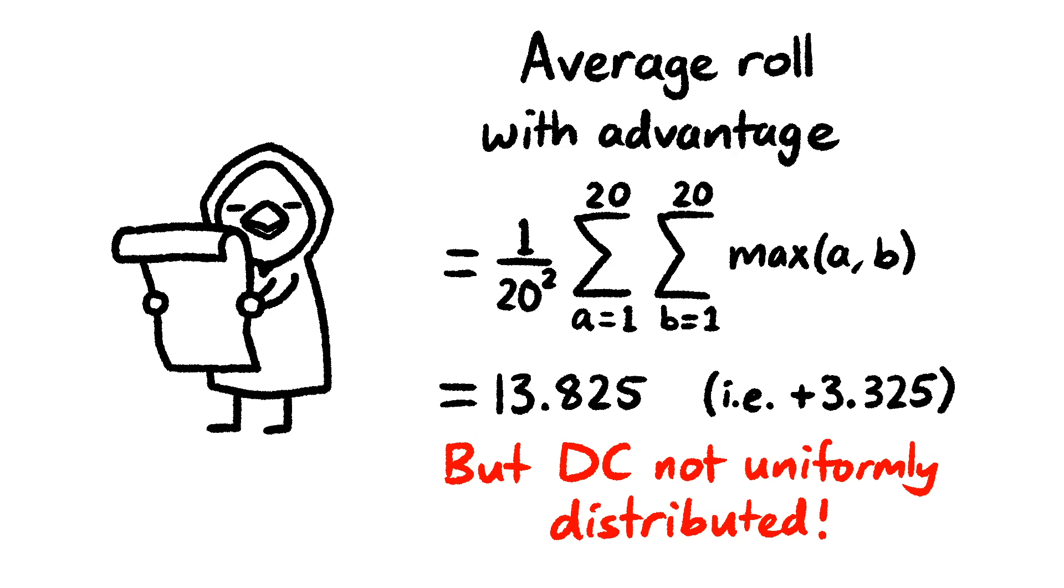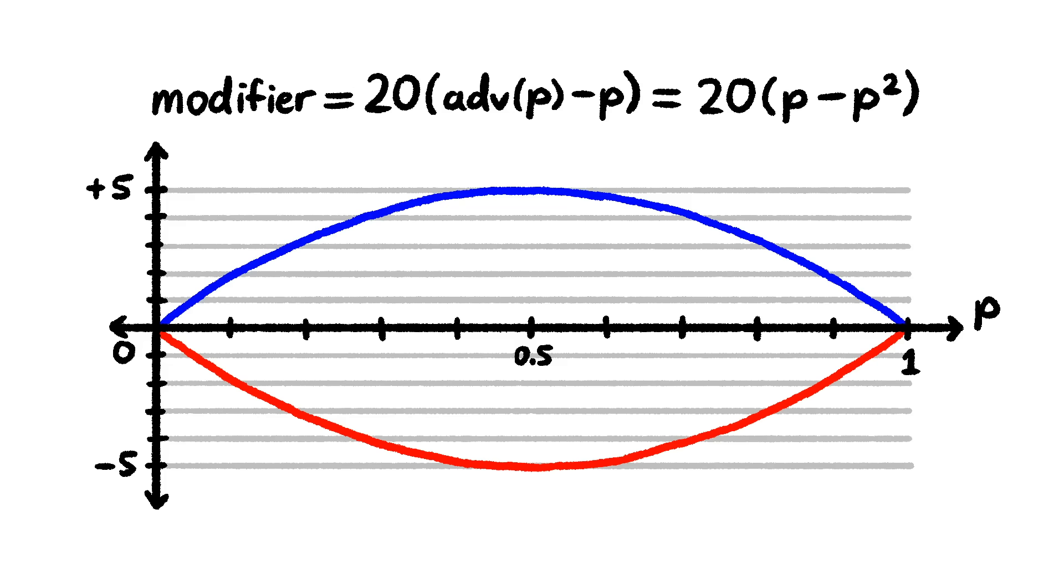You're typically going to run into obstacles that match your player level, which means you're more likely to have a fairly even chance of succeeding checks against them, and it's very rare to run into checks that are either almost impossible or almost trivial. So you might then think that 1.5 is the right figure to start from, and so advantage is equivalent to a plus 5 bonus, but that's not right either.